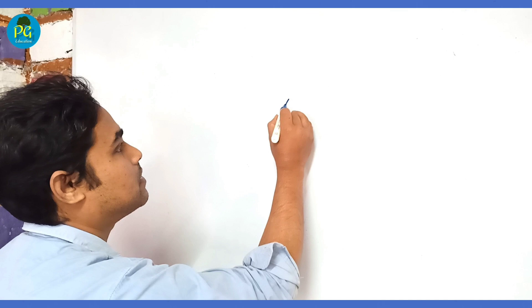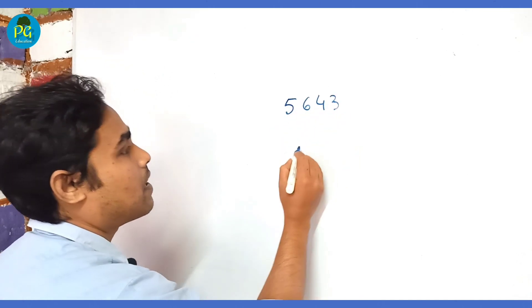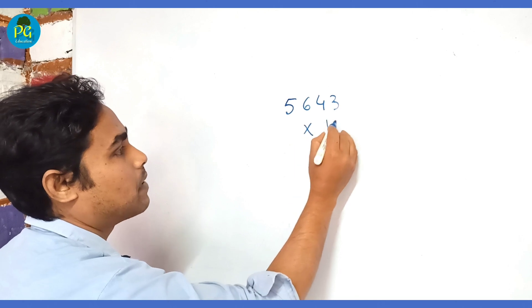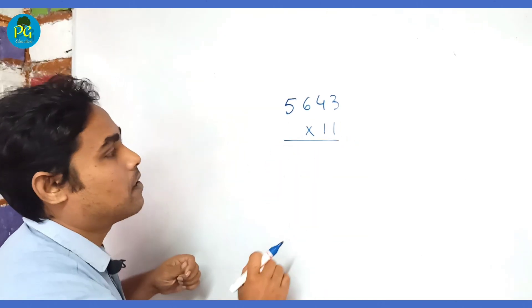any number, suppose it is 5643, and we want to multiply it by 11. Okay, so how can we multiply it in a single line? First,